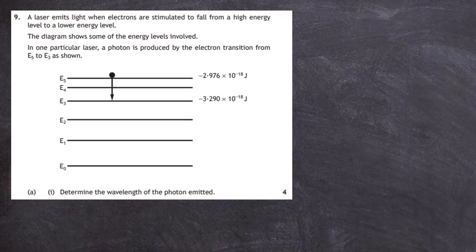Question 9 from section 2 of the 2019 Higher Physics examination. A laser emits light when electrons are stimulated to fall from a high energy level to a lower energy level. The diagram shows some of the energy levels involved.